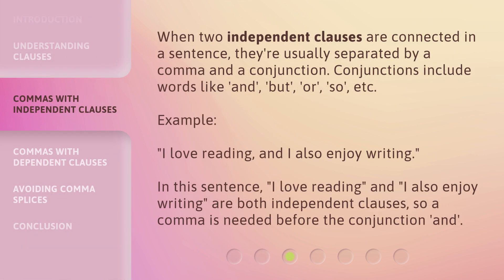When two independent clauses are connected in a sentence, they're usually separated by a comma and a conjunction. Conjunctions include words like 'and,' 'but,' 'or,' 'so,' etc. For example: 'I love reading, and I also enjoy writing.' In this sentence, 'I love reading' and 'I also enjoy writing' are both independent clauses, so a comma is needed before the conjunction 'and.'